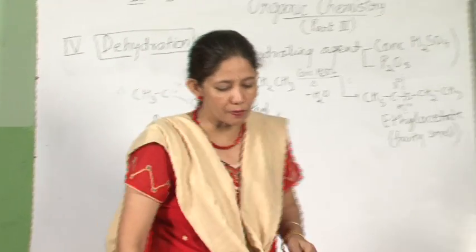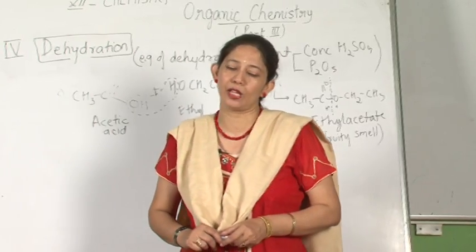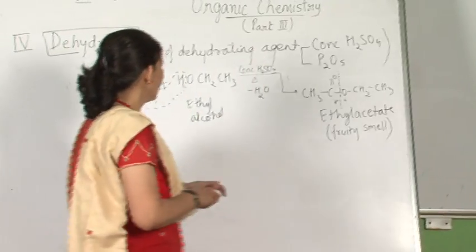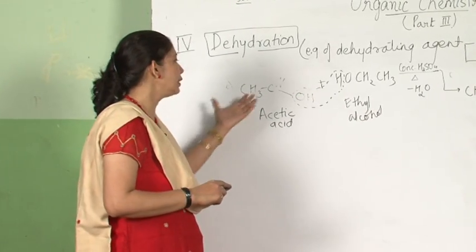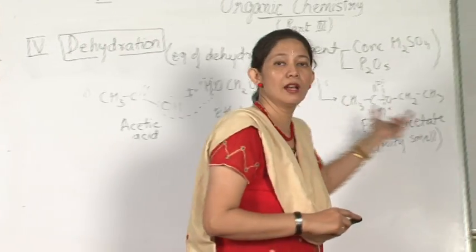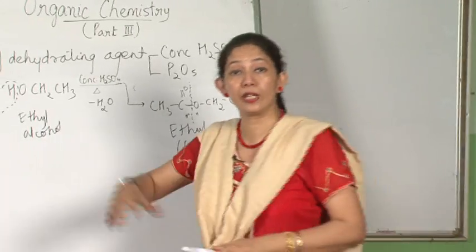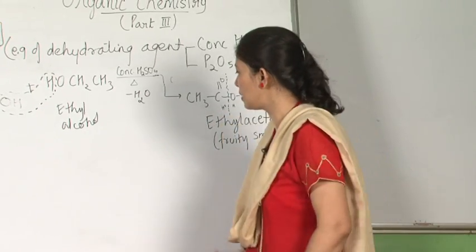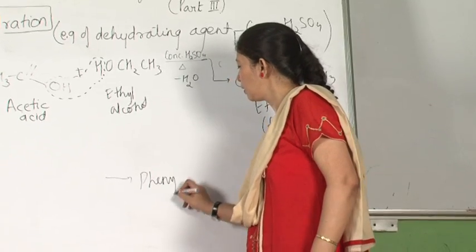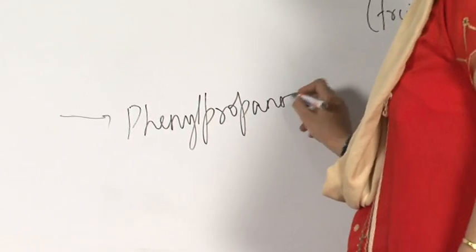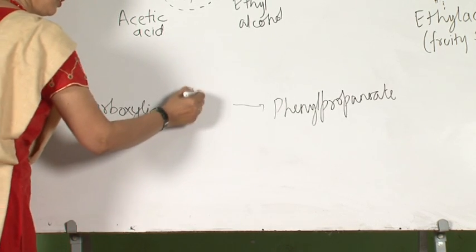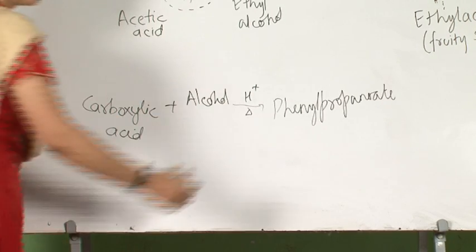I want everyone to open page number 335. In page number 335, question 11.7, one of the reactions involves dehydration — try to complete that reaction. One more type of question can come: if the two reactants — alcohol and carboxylic acid — are given, you find the ester. Similarly, if an ester is given, you should be able to identify the carboxylic acid as well as the alcohol. For example, if I say: prepare phenylpropanoate — identify the carboxylic acid and the alcohol.